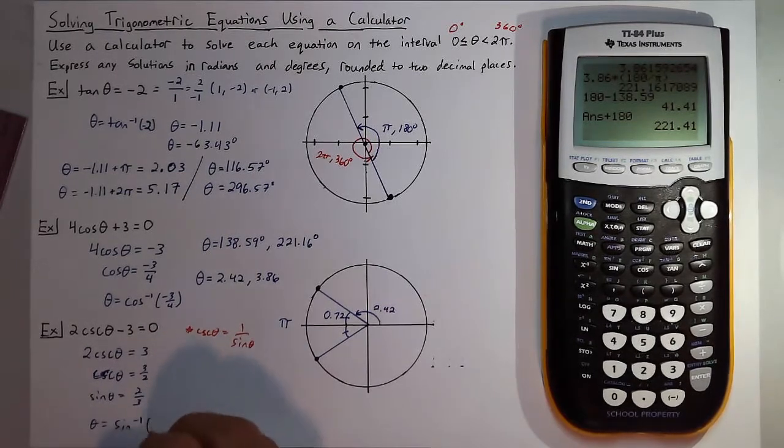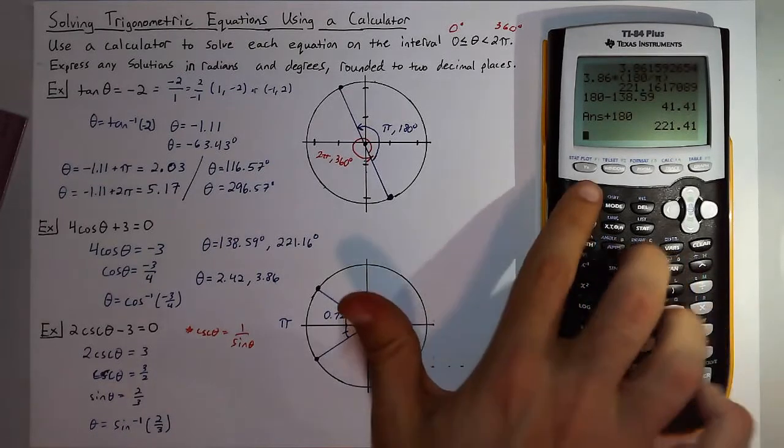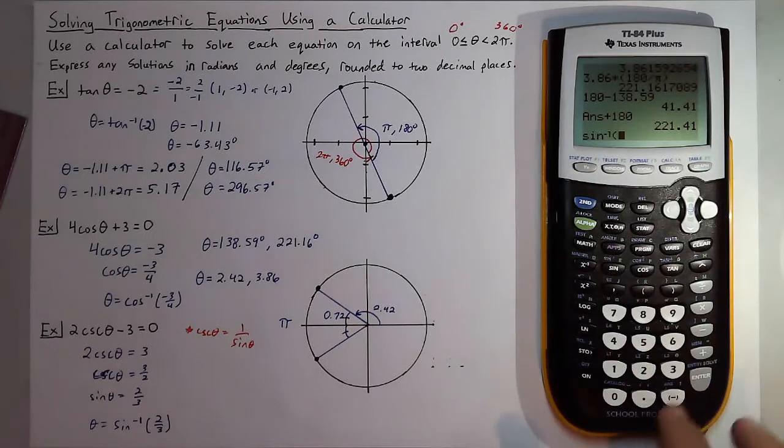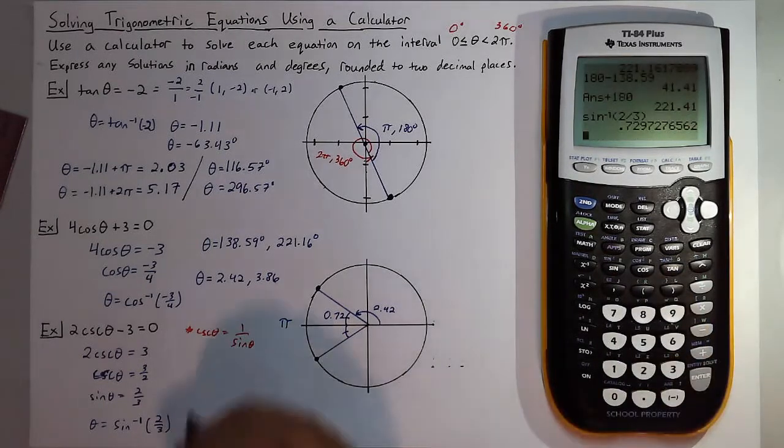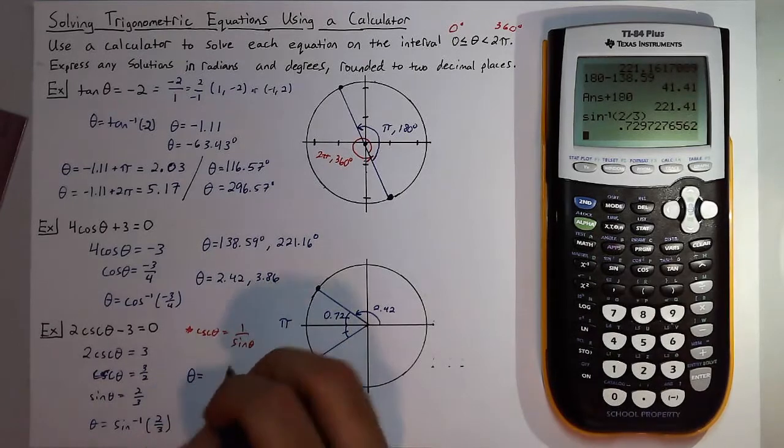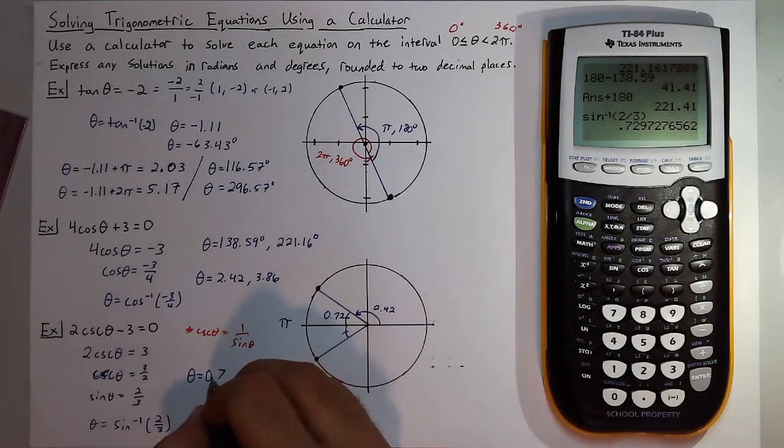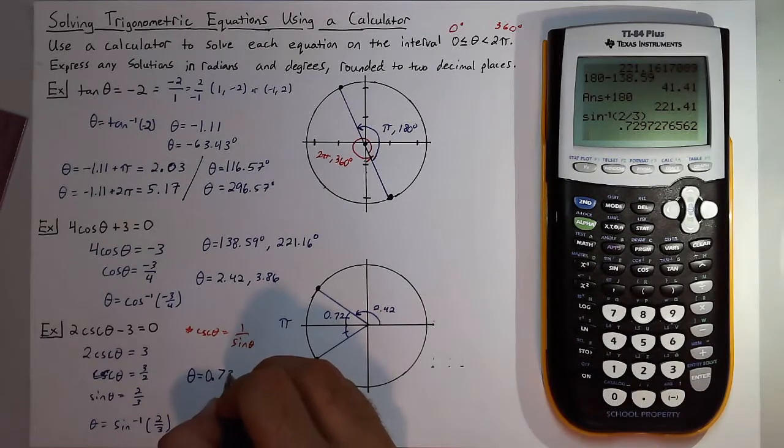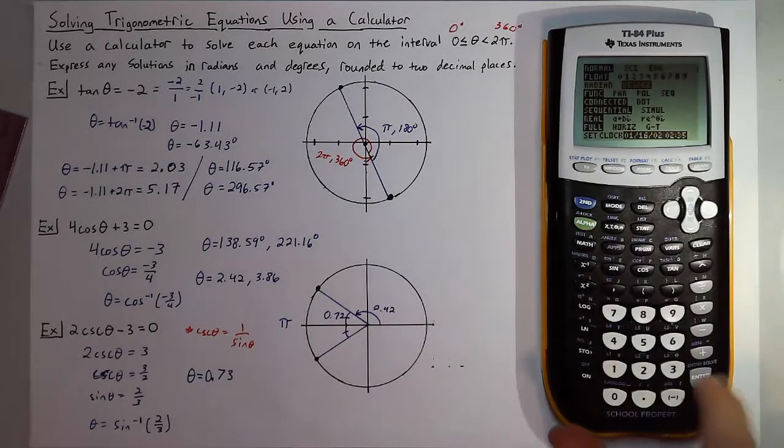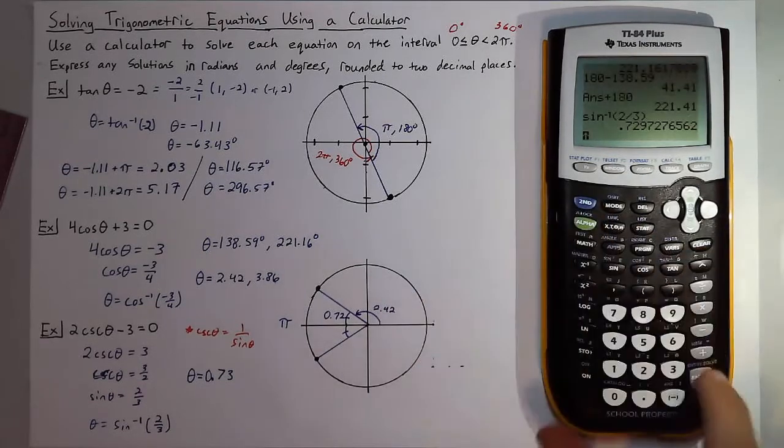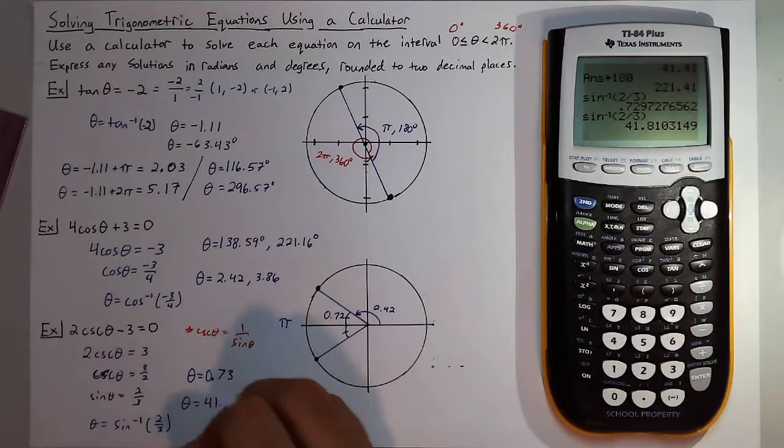So theta is equal to sine inverse of 2 thirds. Plug that into my calculator, this will be in radians first: 2 divided by 3. I'll get theta is equal to 0.73, which is definitely between 0 and 2 pi. Then switching over to degree mode and do the same entry, I can also get 41.81 degrees.